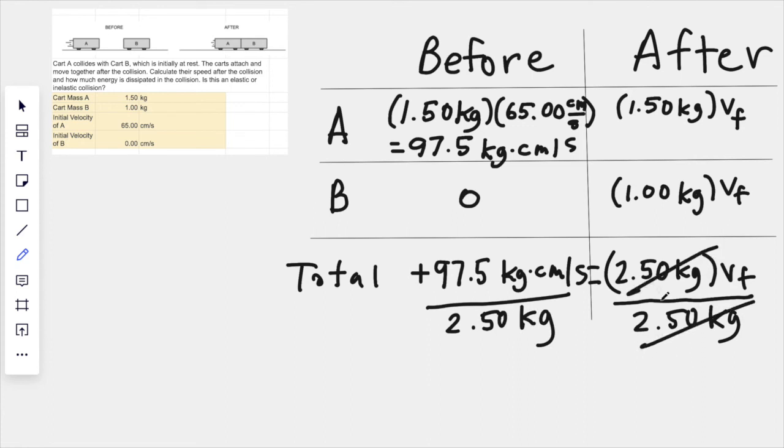And that's going to cancel over here on the right hand side, and the final velocity should equal 97.5 divided by 2.5, and that actually comes out to equal 39.0.